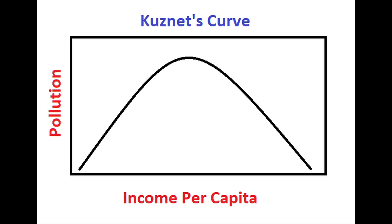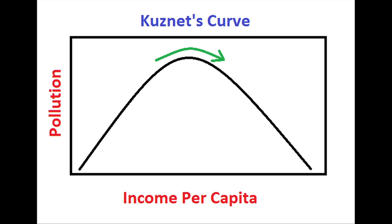The environmental Kuznets curve refers to the increasing degradation and use of some environmental resources and pollutants as a nation's wealth increases up to a certain point. Upon reaching that turning point, the nation will begin to focus on environmental issues and investments in addition to economic resources.